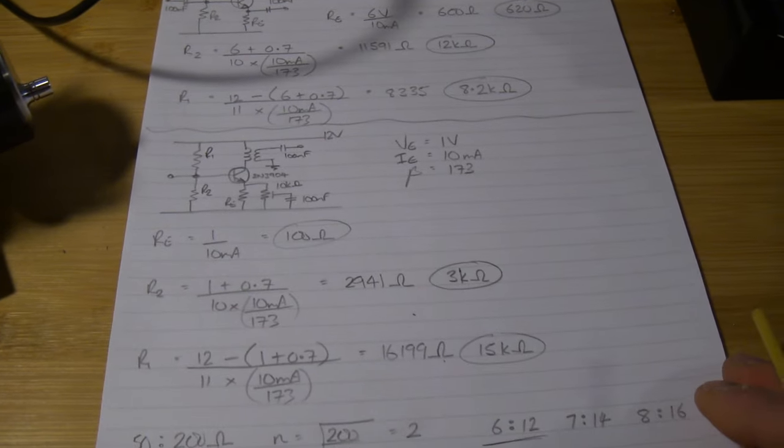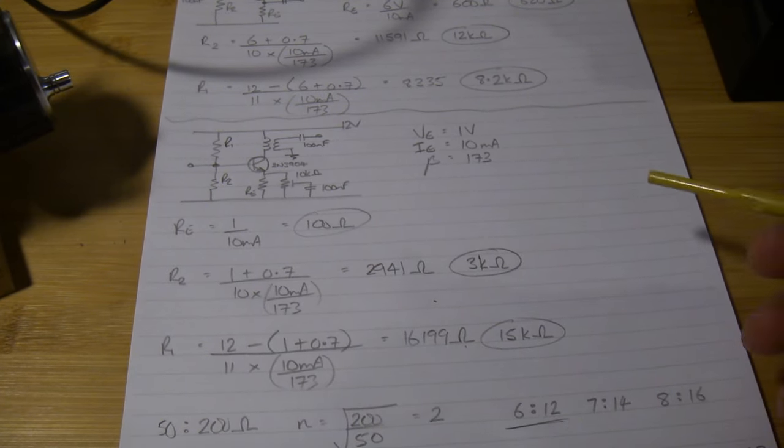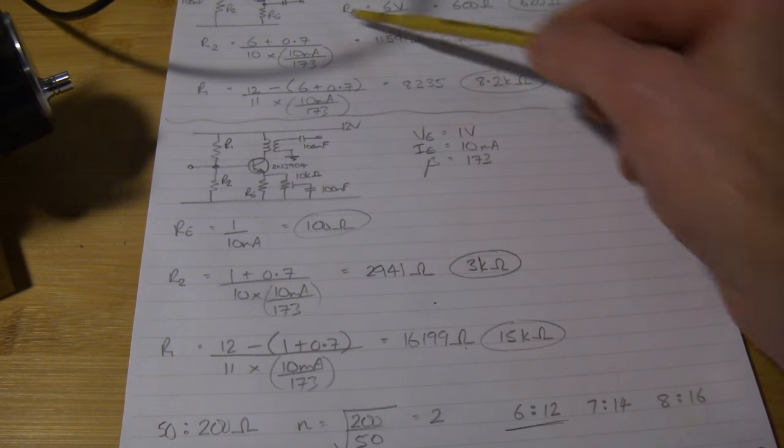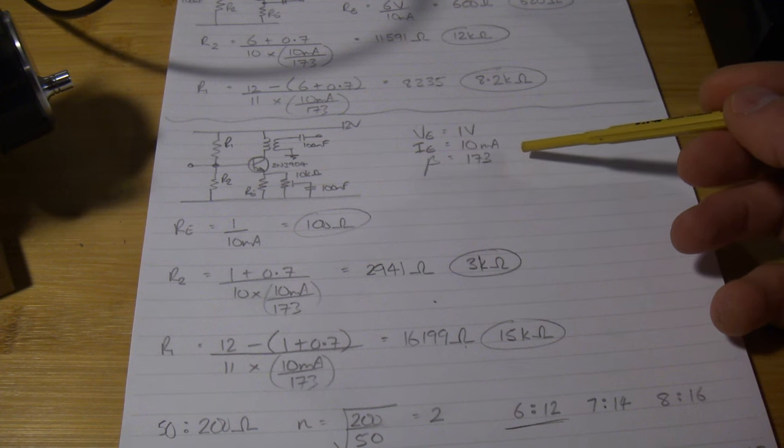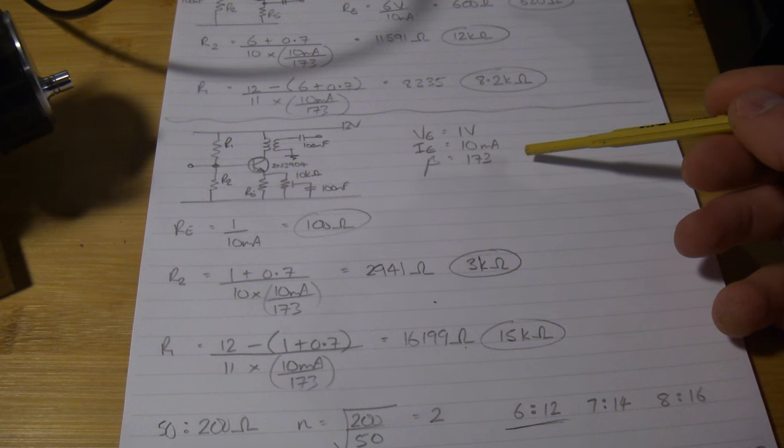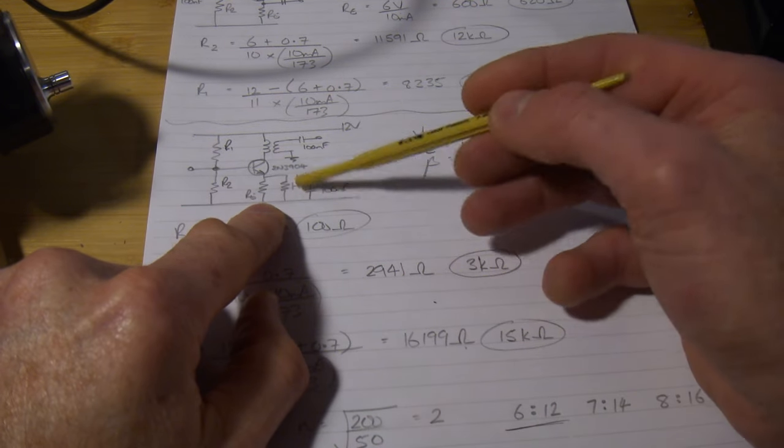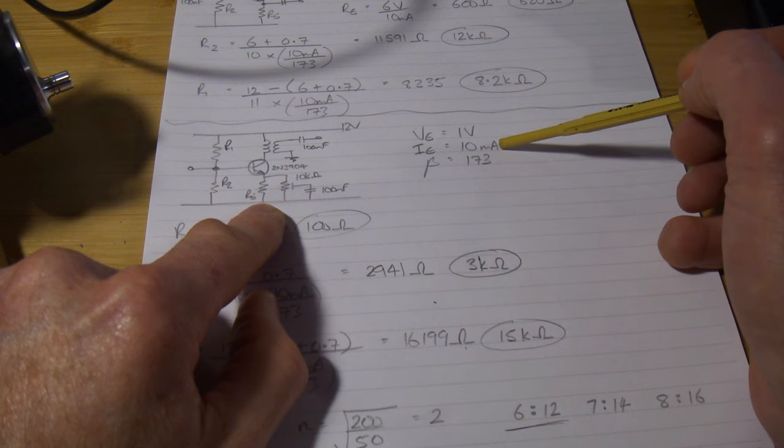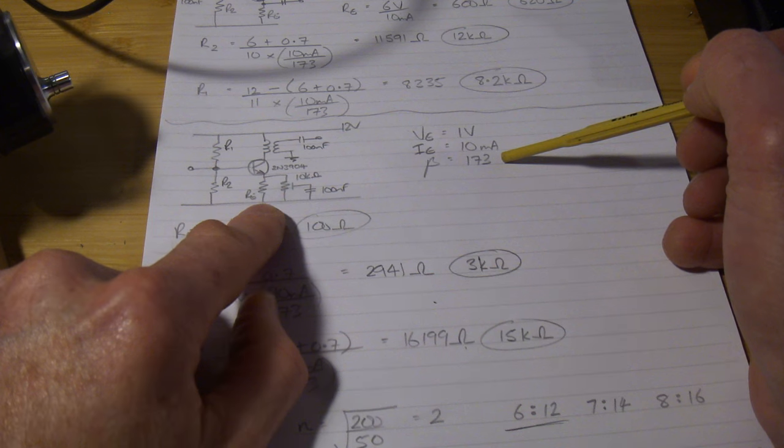For the second stage, the common emitter stage, just to provide a bit of voltage gain, again to drive that output from the buffer, the common collector stage that is, up to our desired 7 dBm drive for that 50 ohm SBL1. So in other words, 1.414 volts peak to peak is what I'm looking for. In this particular case, I'm just going to set the emitter voltage at 1 volt. Again, 10 milliamps is the quiescent current through it, and a beta DC of 173.